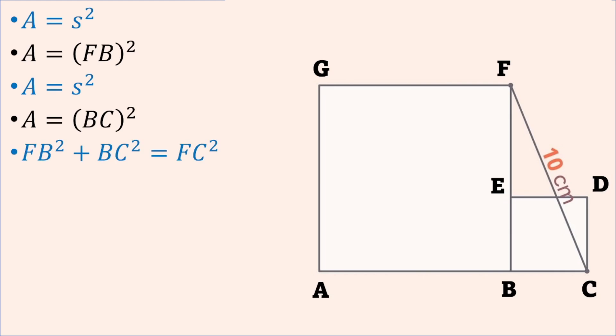Now, I know that FC is 10. So the square of 10 will give me 100 square centimeters. But that is equal to the square of FB plus the square of BC, which is the area of the large square and the small square put together. Therefore, the answer is 100 square centimeters.